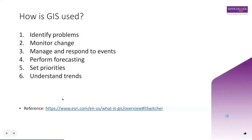So how exactly is GIS used? GIS, as defined by ESRI, can be used for six main use cases: to identify problems, to monitor change, to manage and respond to events, to perform forecastings, to set priorities, and to understand trends. If you've joined this workshop with one of these use cases in mind for a specific dataset, then you've come to the right place.